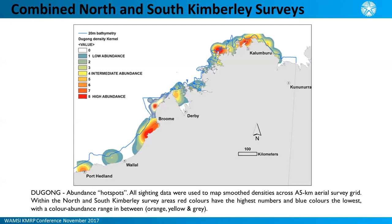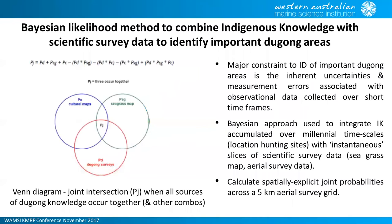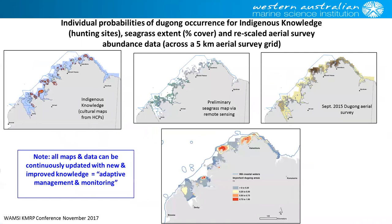Pete also used a Bayesian likelihood method — similar to a multiple evidence-based approach — to bring different knowledge systems together in a scientific and data analysis framework. This combines Indigenous knowledge, seagrass mapping, and Dugong aerial survey data to create maps of important Dugong areas. An advantage of this method is that all the contributing maps can be updated over time as new knowledge becomes available, continuously improving the combined output.